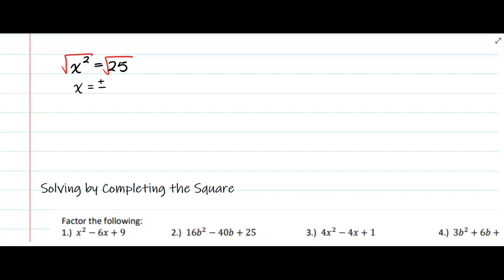And always plus or minus when you take the square root of a number. The square root of 25 is 5.